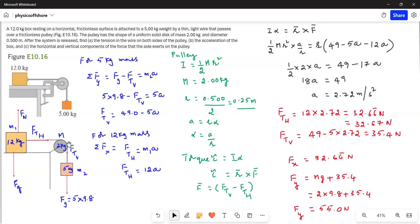And then y component forces, we have the weight of the pulley and also the weight of the 5 kg mass. If we add both, we will get 55 newtons. This is the y component force. This is the answer for this question.